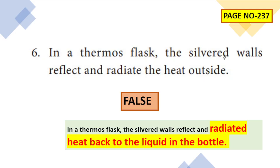In a thermoflux, the silvered walls reflect and radiate the heat outside — this statement is false. The flask's main purpose is to store heat inside the liquid. The silvered walls actually reflect radiated heat back to the liquid in the bottle, not outside. So the corrected statement is that silvered walls reflect heat back to the liquid.